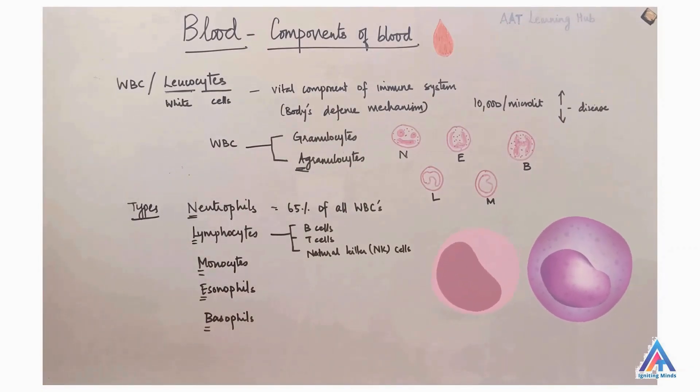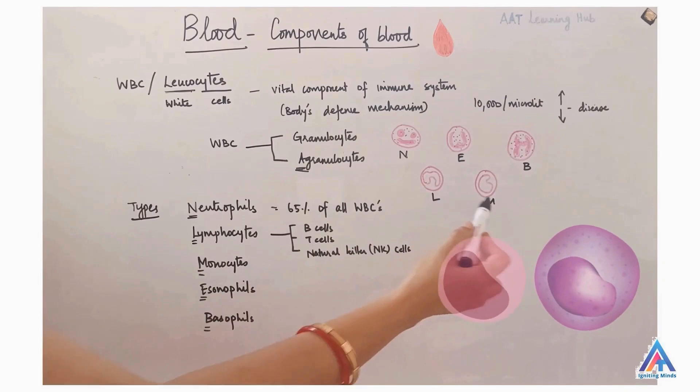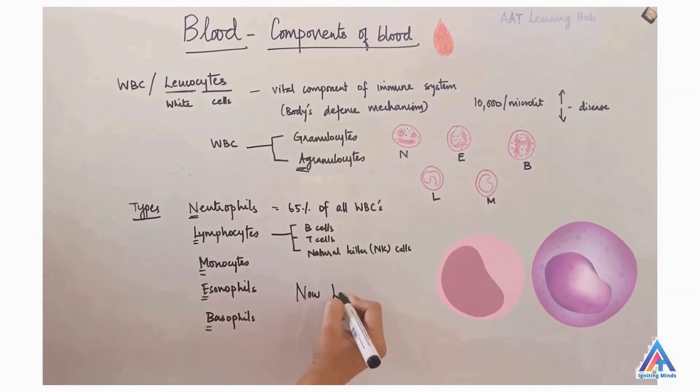Of these five types of WBCs, neutrophils, eosinophils and basophils fall under granulocytes while lymphocytes and monocytes fall under agranulocytes. Now, how to remember these five names? There's a mnemonic for it.